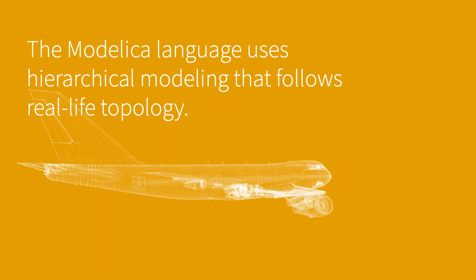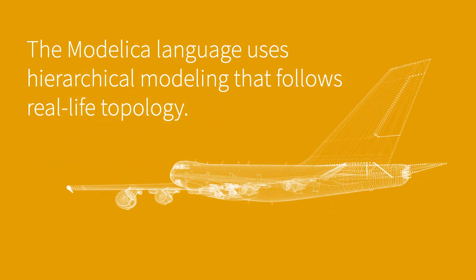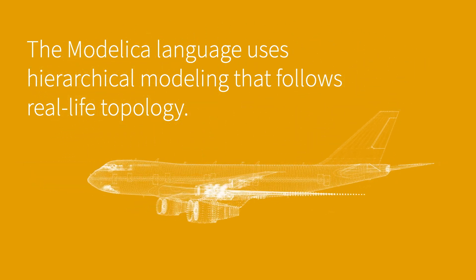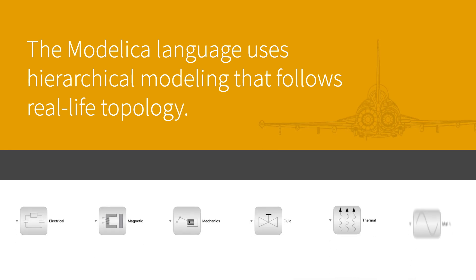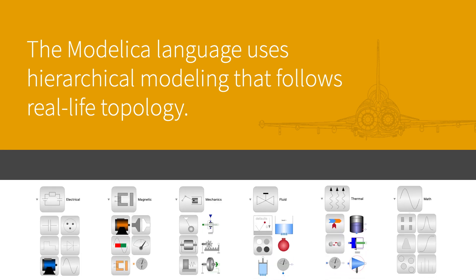When looking at large systems, you typically try to split them into smaller, more digestible parts. For instance, an aircraft might be decomposed into things like an electrical control unit, wings, landing gear, and so on. Those can then be decomposed into even smaller systems. Modelica is object-oriented and allows you to follow this real-world topology when modeling.